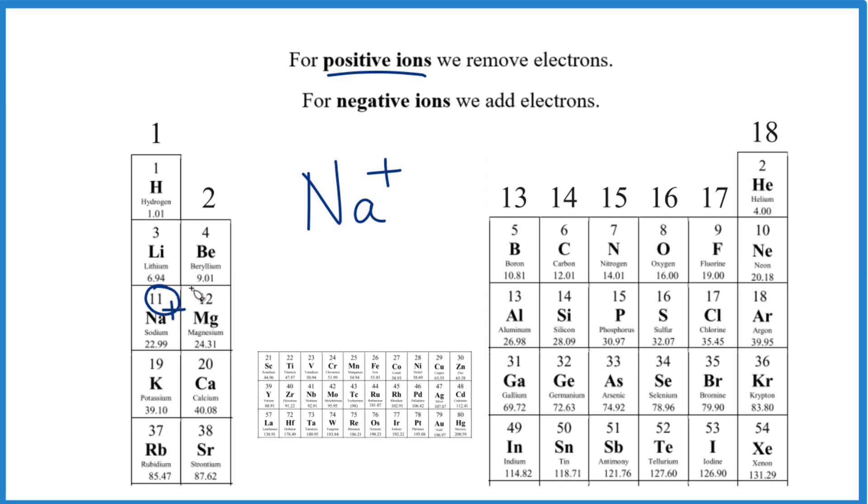But if we have that plus after it, we remove one electron. So instead of having 11, we have 10. Sodium plus has 10 total electrons.